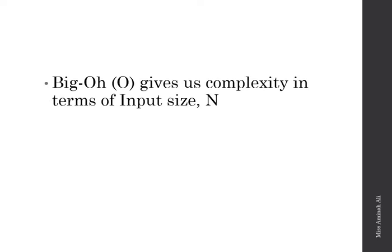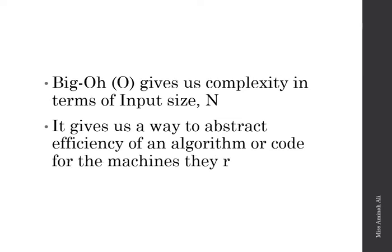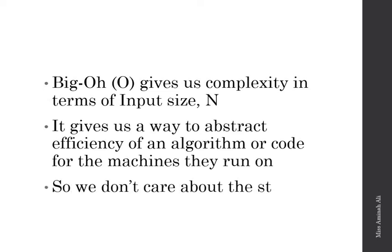When we have two algorithms, we need to know which one is better, so we analyze them. We have discussed asymptotic analysis, which uses notations like Big O, Big Theta, and Big Omega. Big O tells us our algorithm's efficiency in terms of input size n, and it gives us a way to abstract that efficiency regardless of the machine they run on — so we do not care about the state of the machine.